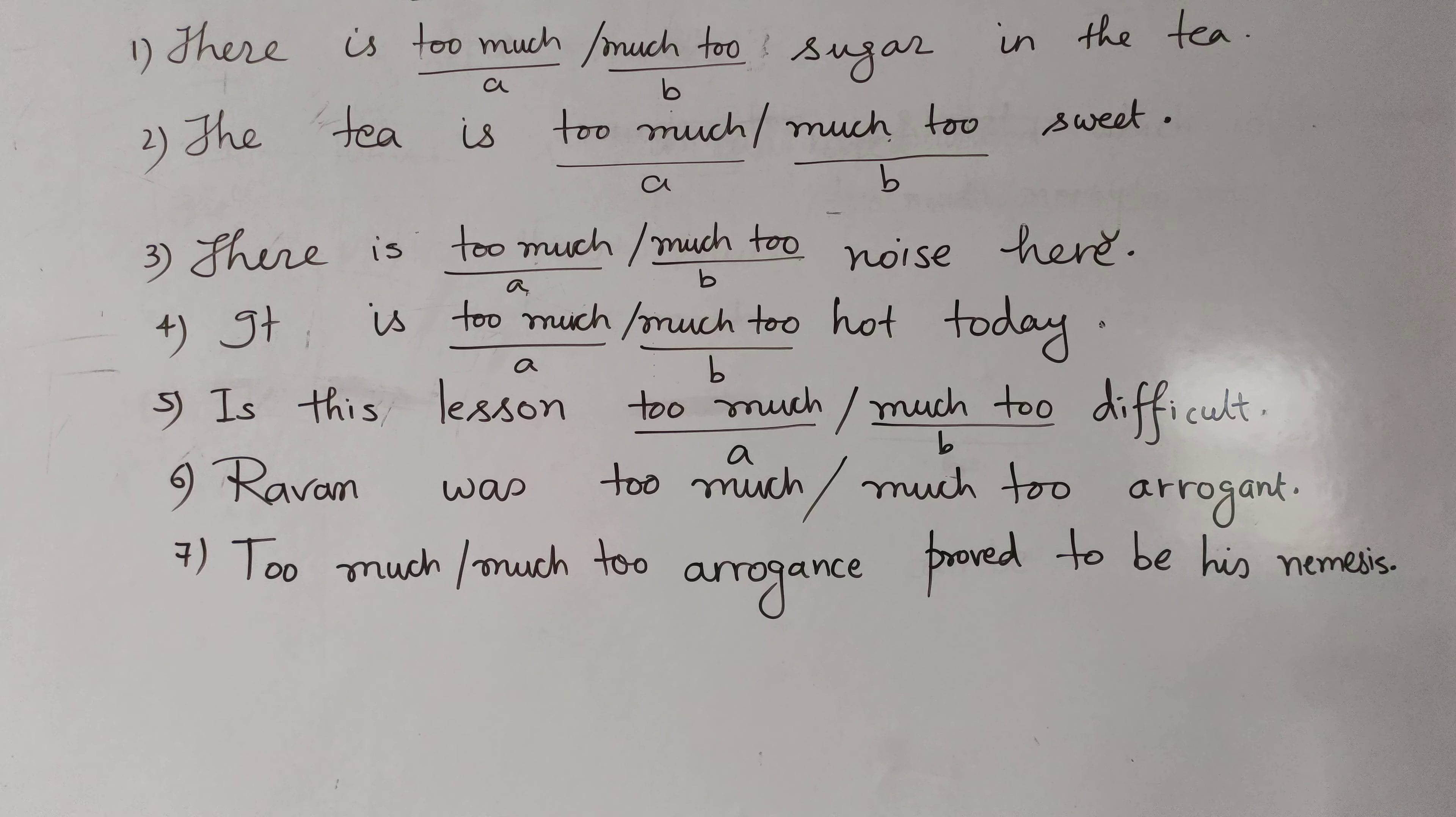There is too much sugar in the tea. And you are right. A is the correct option here. And one special emphasis on the pronunciation of the word sugar. It is not sugar, it is sugar. All right. There is too much sugar in the tea. Chai mein bahut zyadha, zarurat se zyadha, chini hai.